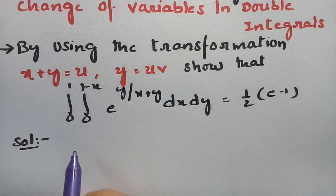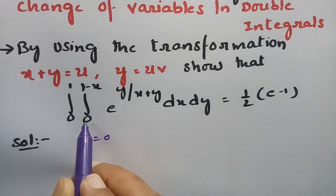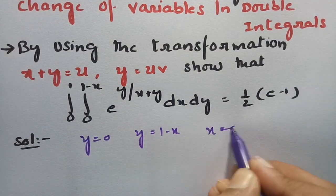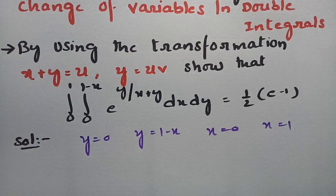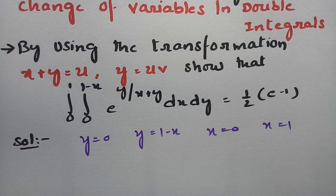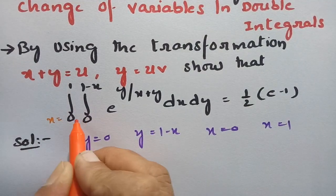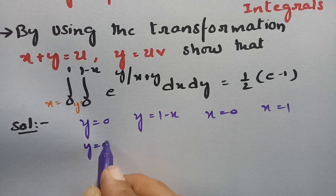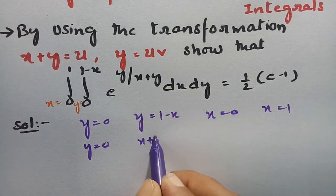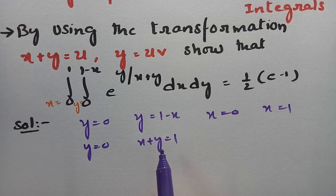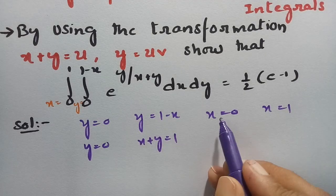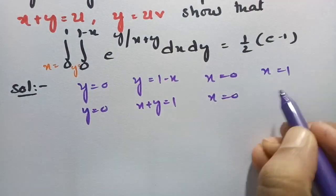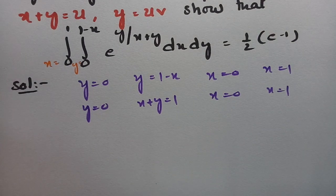We have to transform this Cartesian form and get the answer as half times (e minus 1). The y limits are from 0 to 1 minus x, and the x limits are from 0 to 1. From these limits: y equals 0, and sending x to the other side gives x plus y equals 1, which is a straight line. Also, x equals 0 and x equals 1.